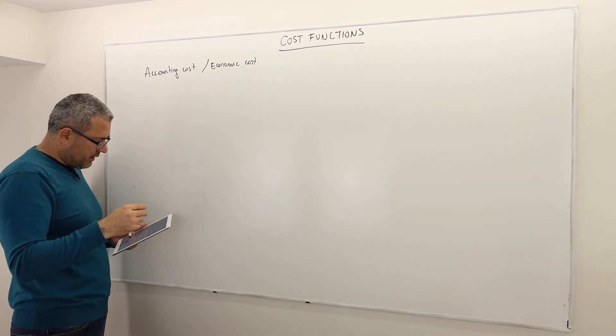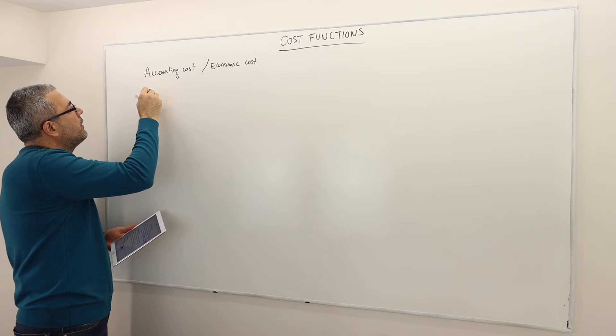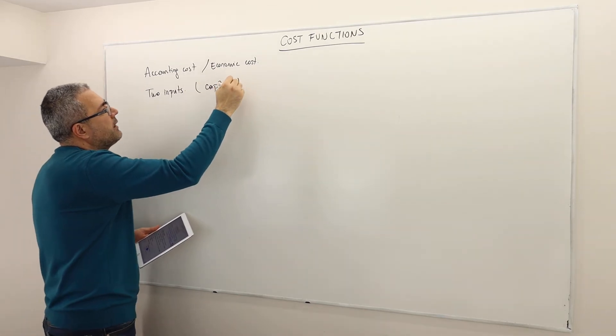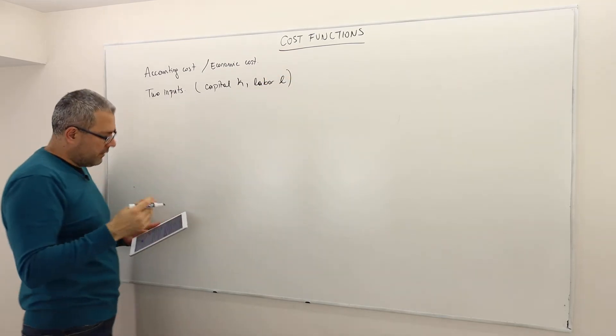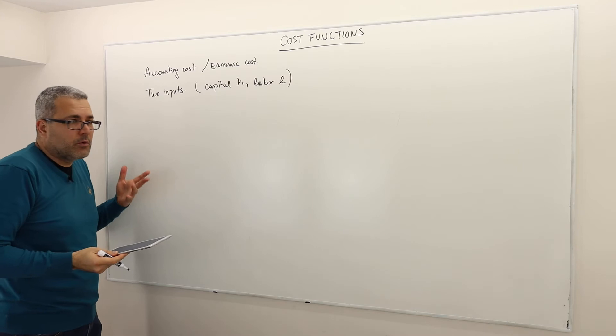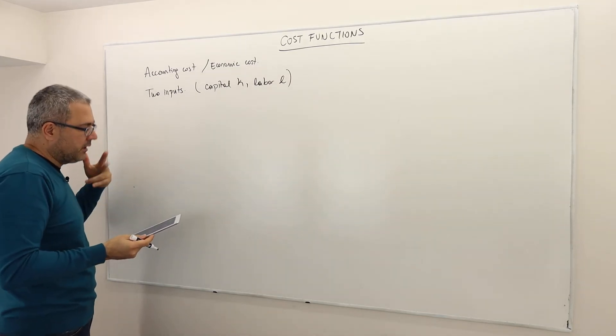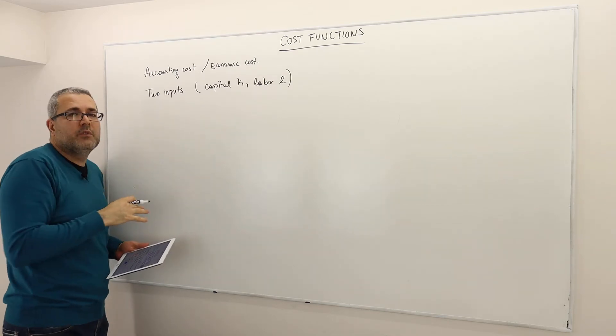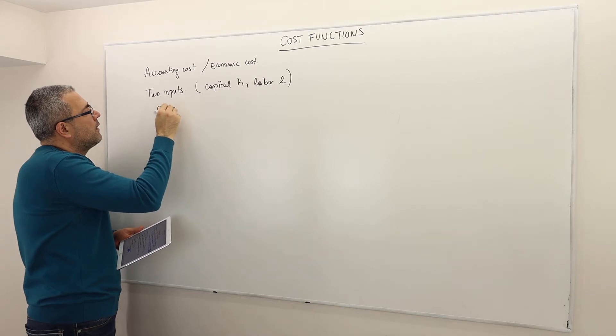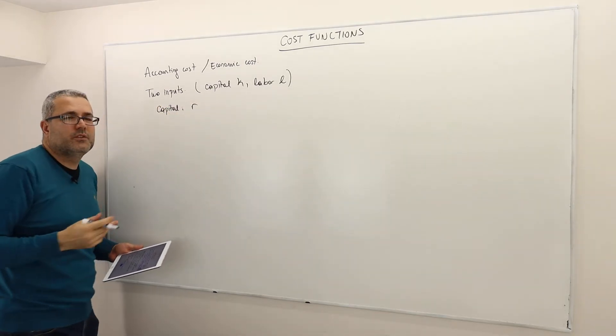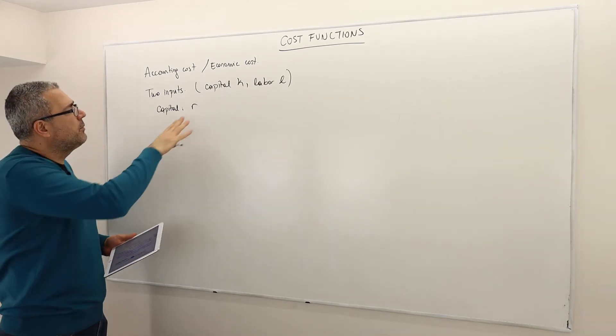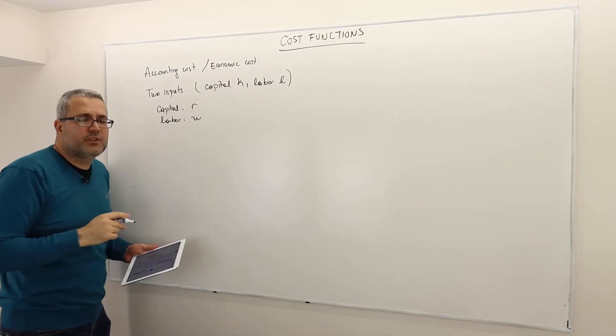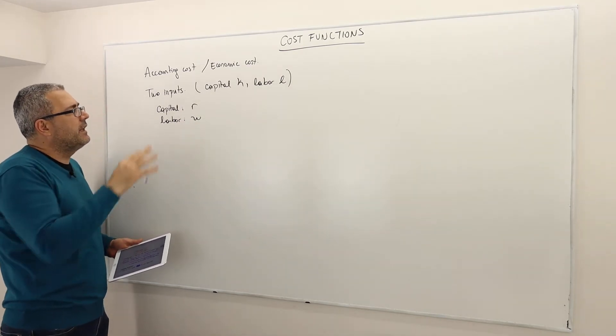There are some simplification assumptions I will be making. One of them is that we're going to be assuming two inputs: capital, which we denote by K, and labor, which we denote by L. So the capital can be measured in capital hours or units, and the labor is measured by labor hours or units. So inputs are hired in a competitive market, meaning the inputs are not free. The capital has a cost of R—why R? Because R is the rent of capital. And the labor cost is W, which corresponds to wage.